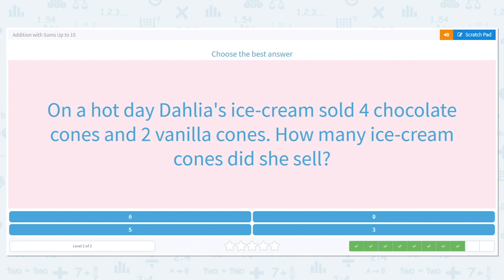On a hot day, Dahlia's ice cream sold four chocolate cones and two vanilla cones. How many ice cream cones did she sell?